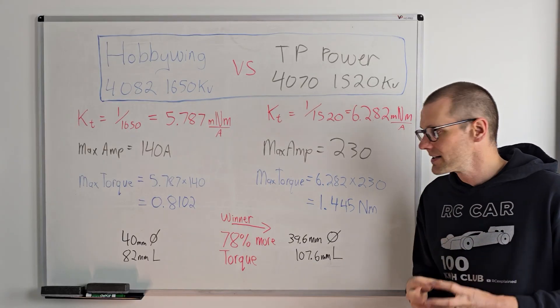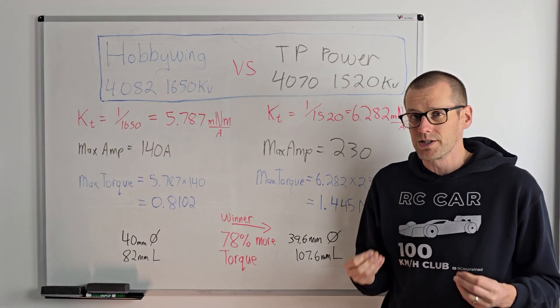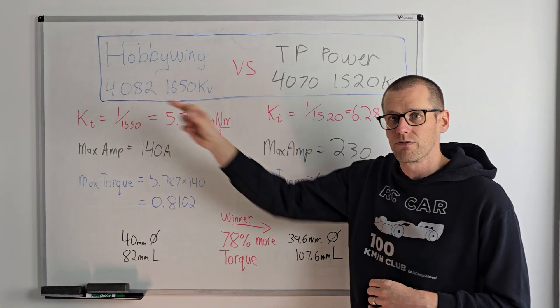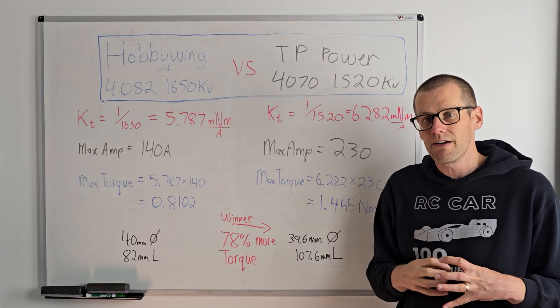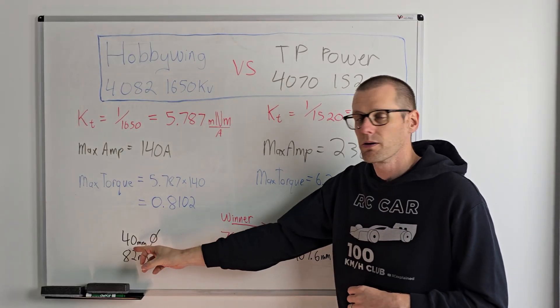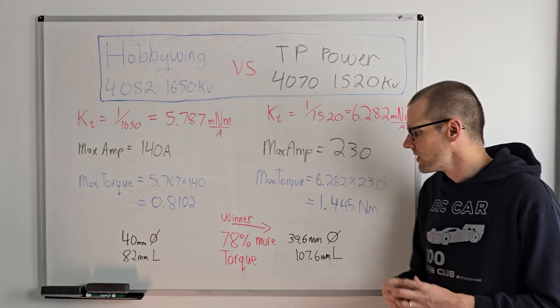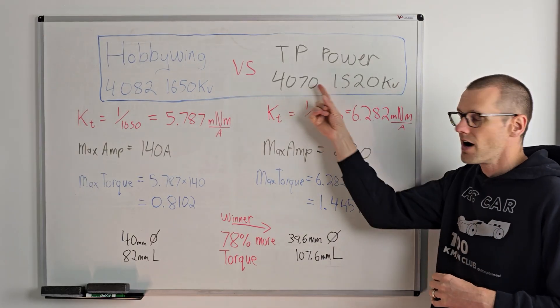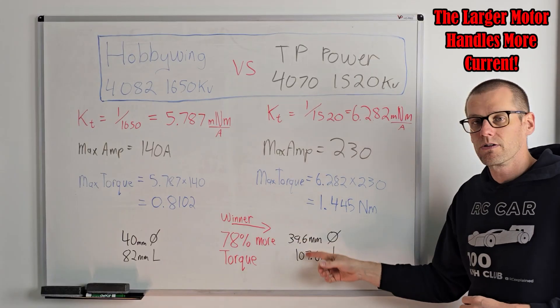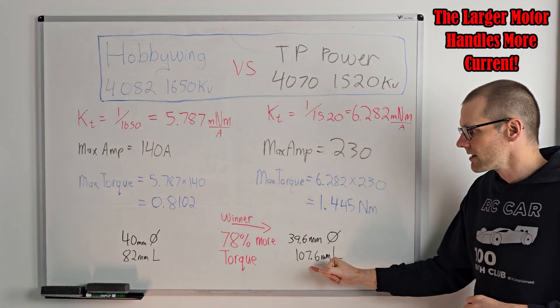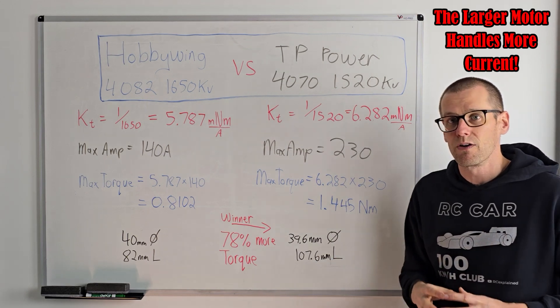When we look at the actual size of the motor, this is where we can really see what's going on here. Our Hobbywing 4082 actually stands for the size and millimeters of that brushless motor. This is a 40 millimeter diameter can with an 82 millimeter long can. And when we look at our TP brushless motor, this is not the can size. It has got a 39.6 millimeter diameter can. And the length of this brushless motor is 107.6.